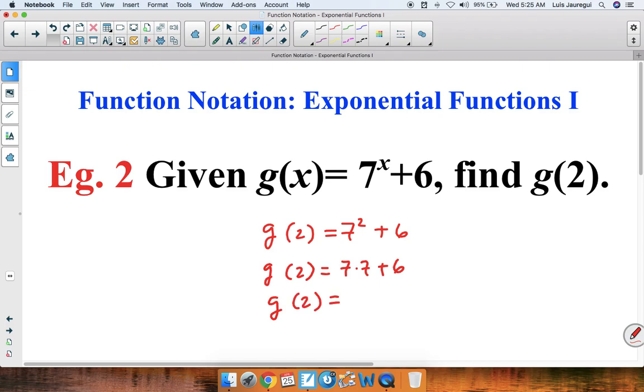Now, evaluating, we have g(2) = 7 × 7, which is 49, plus 6. And one gets that g(2) = 49 + 6, which happens to be 55.